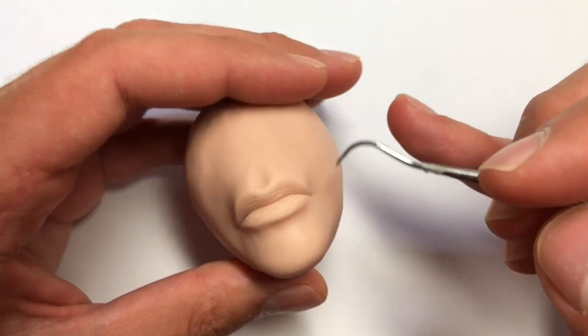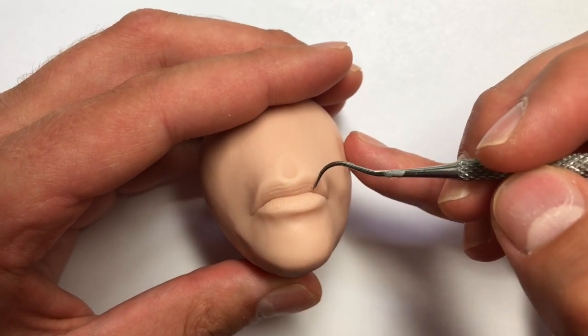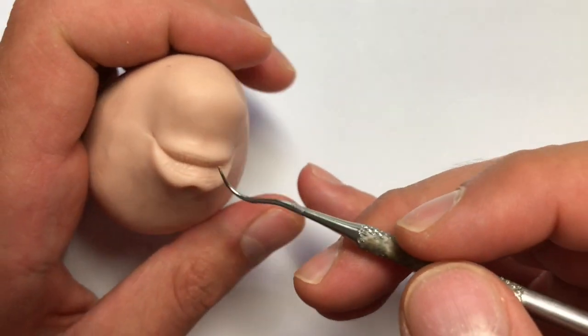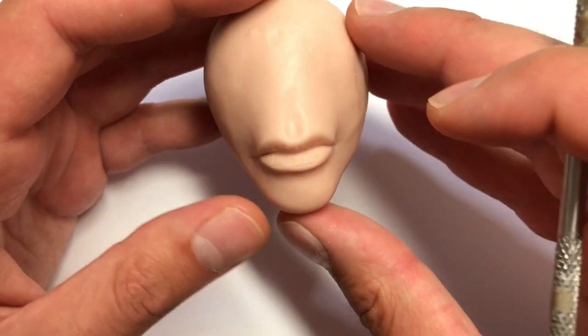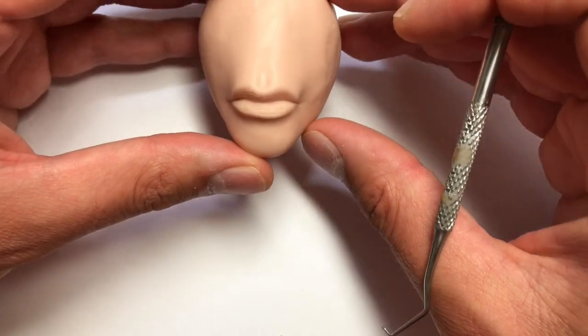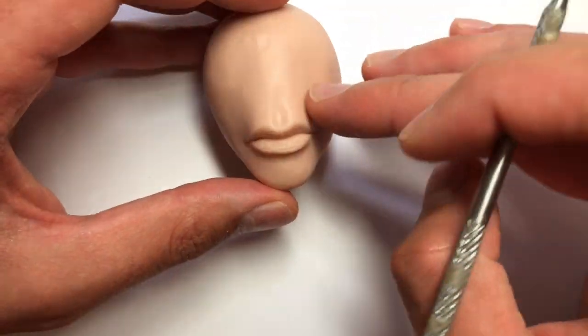I'm trying to make pretty normal looking ones, but you can make them exaggerated, you can make them really thin, you can make old people lips. You can do really whatever you want using the same technique. I'm just doing the basic rundown so you have something to go off.